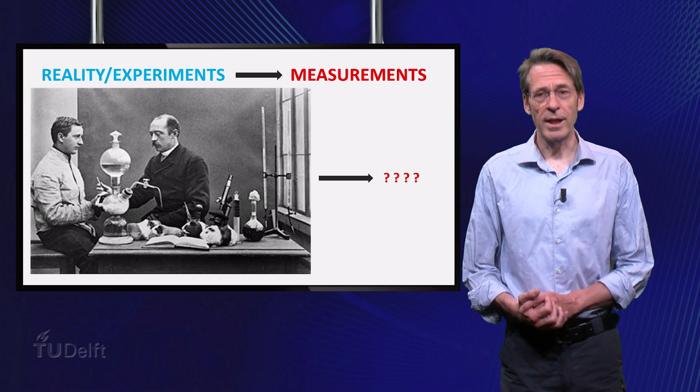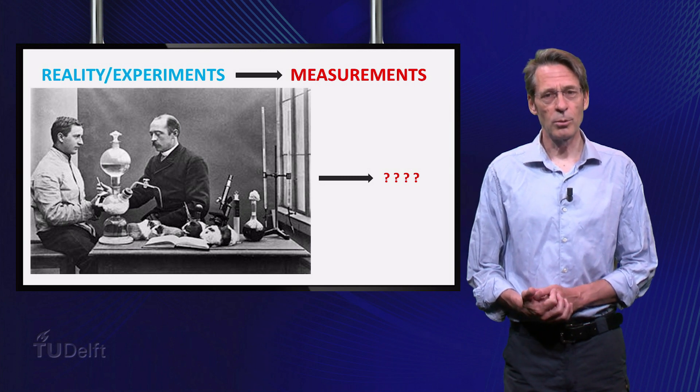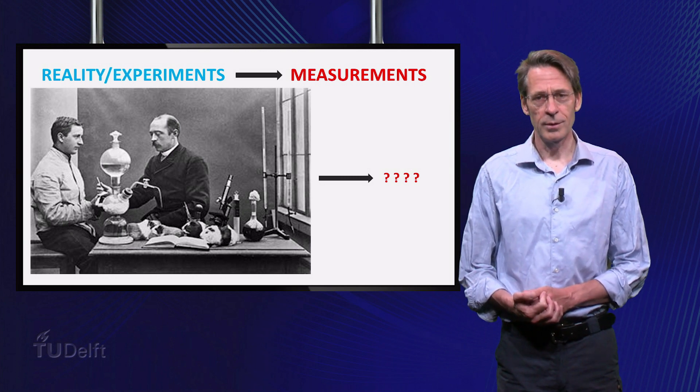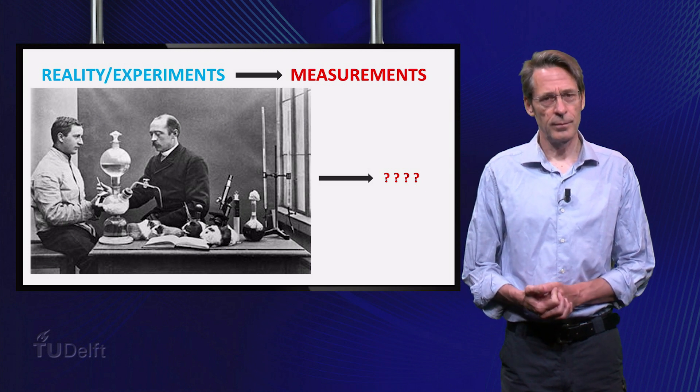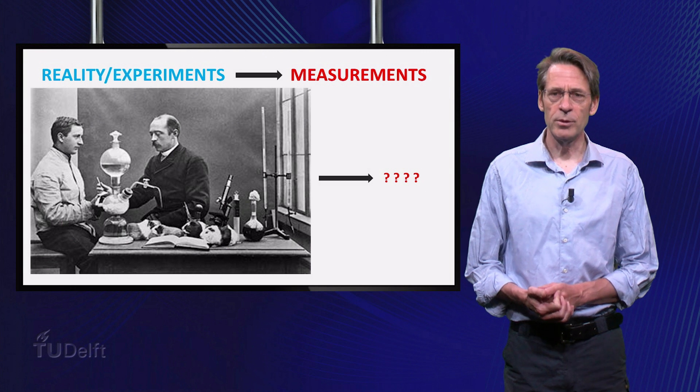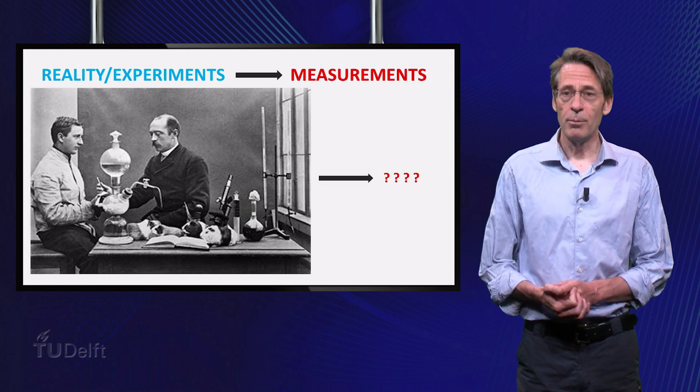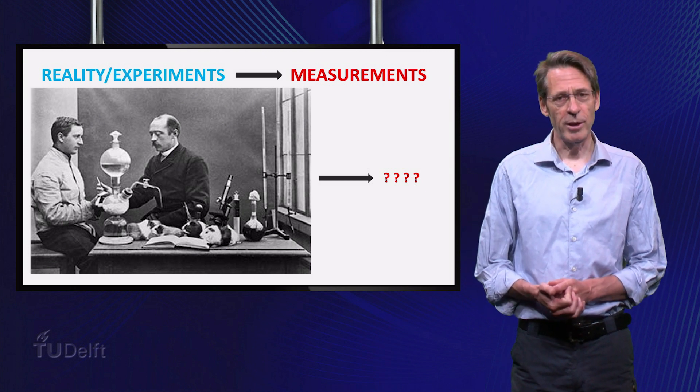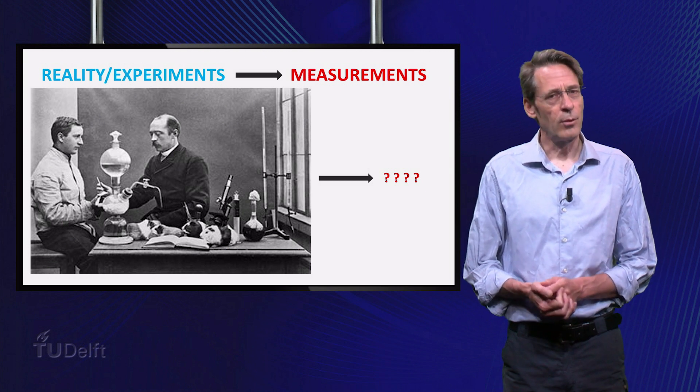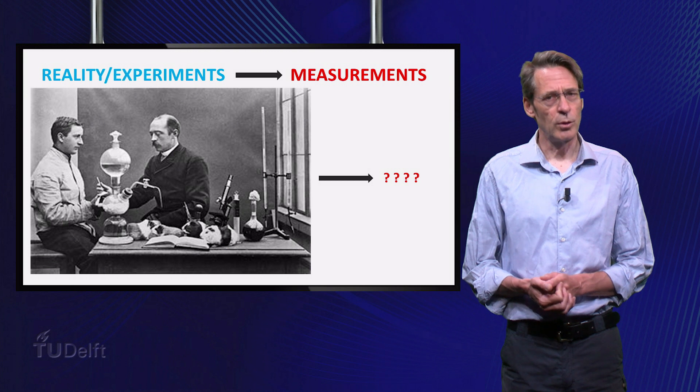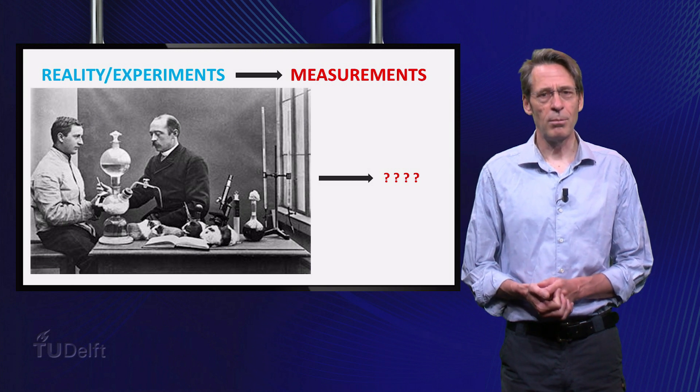For instance, think of an engineer that wants to determine some property of a new material, say its thermal coefficients or its strength. Ideally one experiment would give the required value, but in practice a series of experiments will all give slightly different values. Random effects, usually put under the name random errors, play a role.